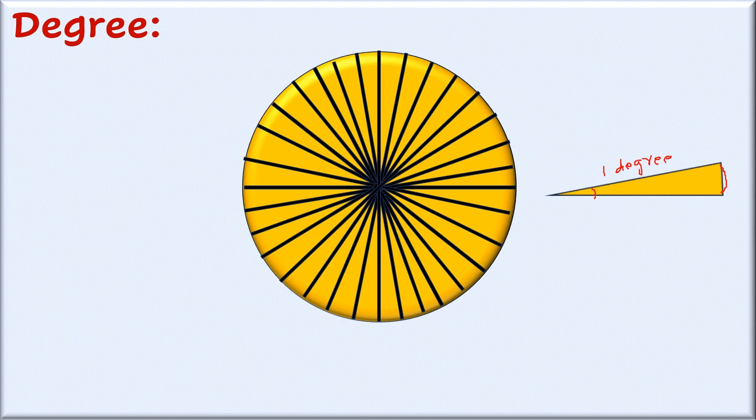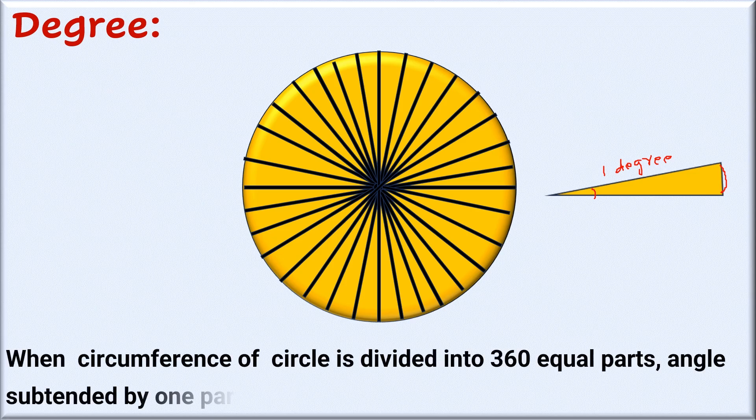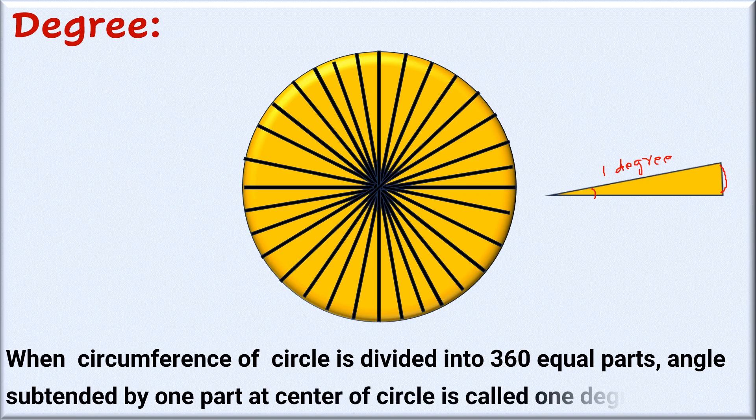We can define the degree as: when the circumference of a circle is divided into 360 equal parts, the angle subtended by one part at the center of the circle is called one degree. Now, degree has subunits.